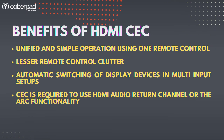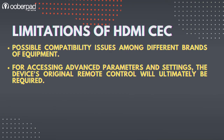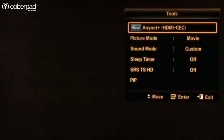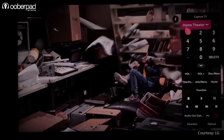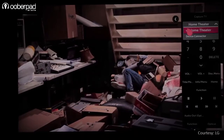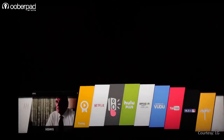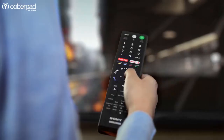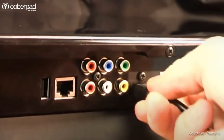Now let's look at some of the shortcomings of HDMI CEC. You may face some compatibility issues among different brands of equipment. For example, Samsung's AnyNet may not be fully compatible with LG's Simplink and vice versa. You may have access to only limited and basic control parameters such as on and off, volume, and play/pause. For accessing advanced parameters and settings, the device's original remote control will ultimately be required.